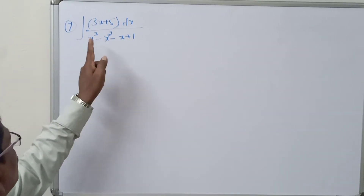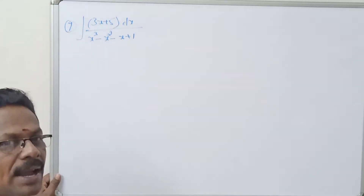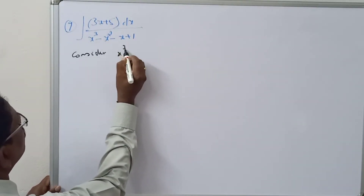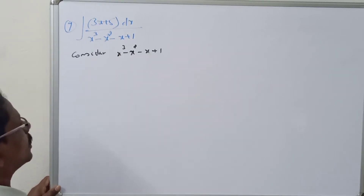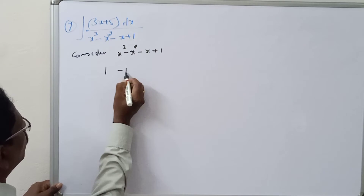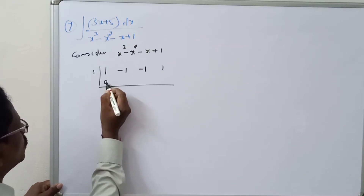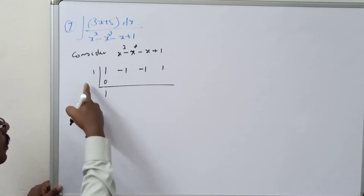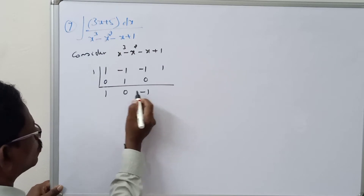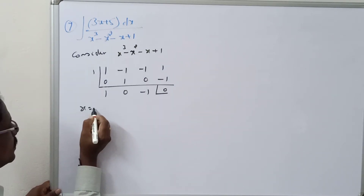Good morning students. Now one more sum — the denominator is a cubic equation, so we need to factorize the denominator. Consider x³ - x² - x + 1. By synthetic division, we use coefficients 1, -1, -1, 1. Taking x = 1: 1, then 1×1 = 1, 1+(-1) = 0, 1×0 = 0, 0+(-1) = -1, 1×(-1) = -1, -1+1 = 0. So x = 1 gives remainder 0.